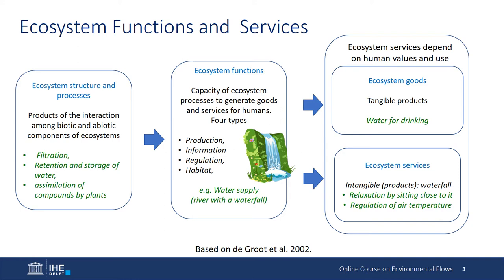The idea of ecosystem services is useful to show how humankind's survival depends on maintaining the functioning and structure of ecosystems and biodiversity. The degradation of natural systems — for example, reducing their extension, extinguishing species, or polluting water, soil, and air — reduces the capacity of ecosystems to keep functioning and maintain the processes that make life possible, including human life. For example, filtration of water through the layers of the soil and the assimilation of compounds dissolved in water by plants results in water of a specific quality and quantity that flows through rivers and can be stored in lakes.